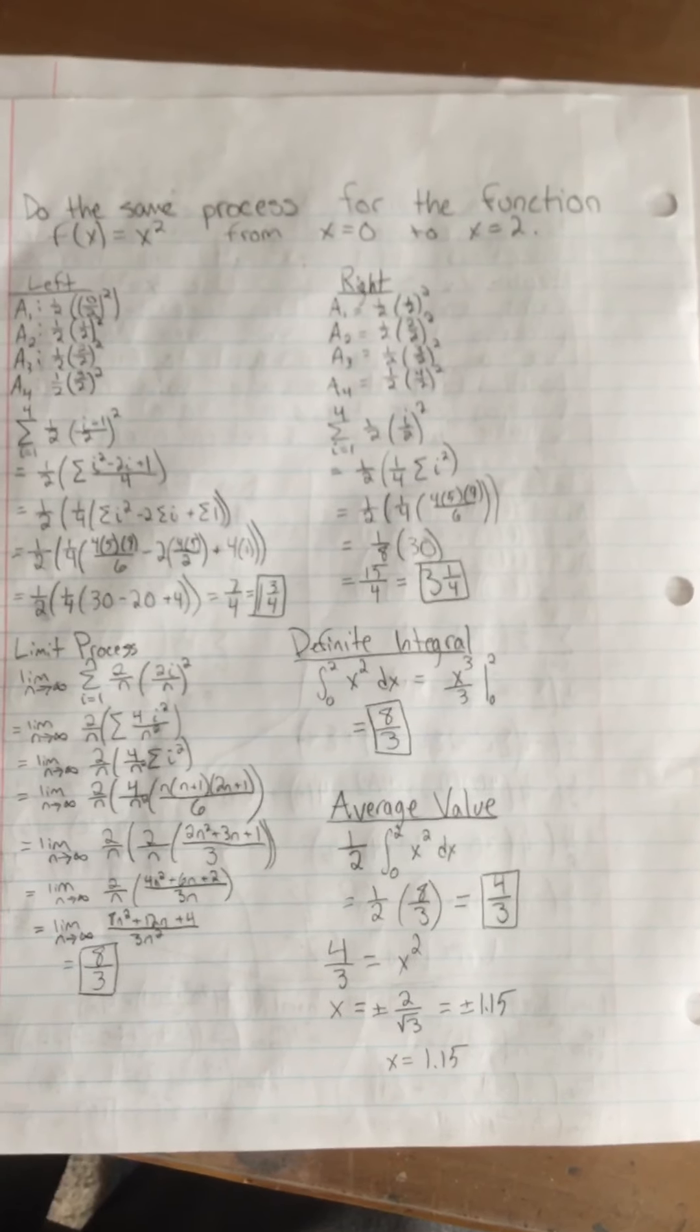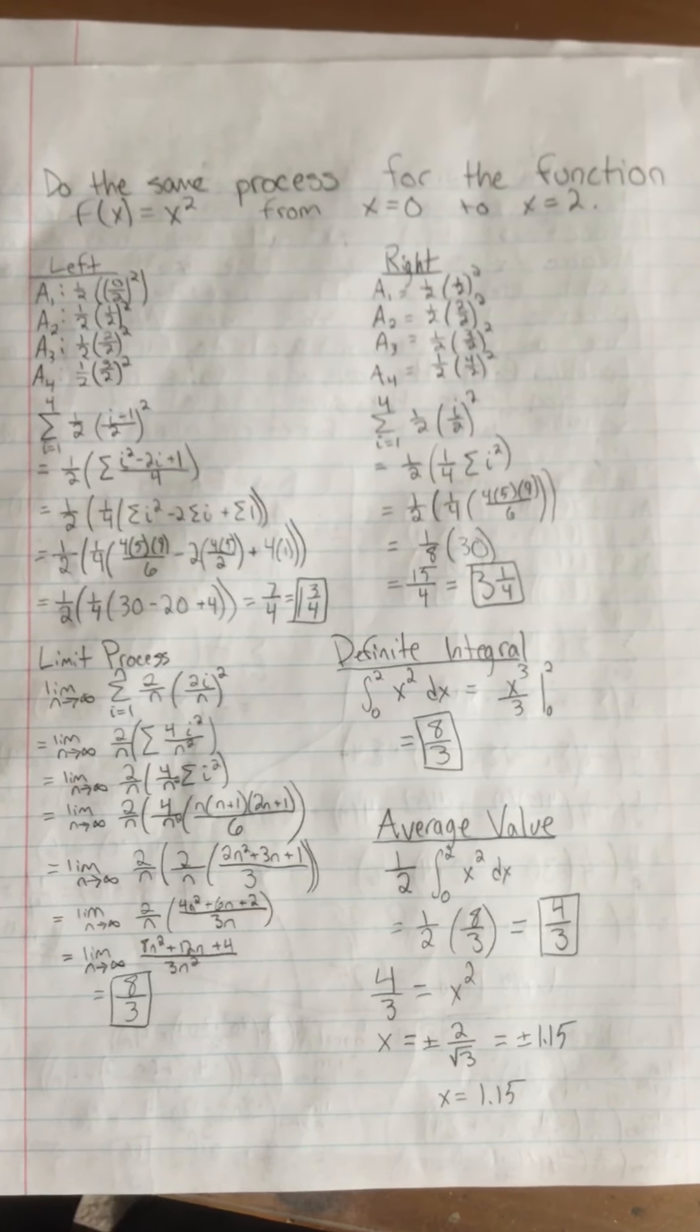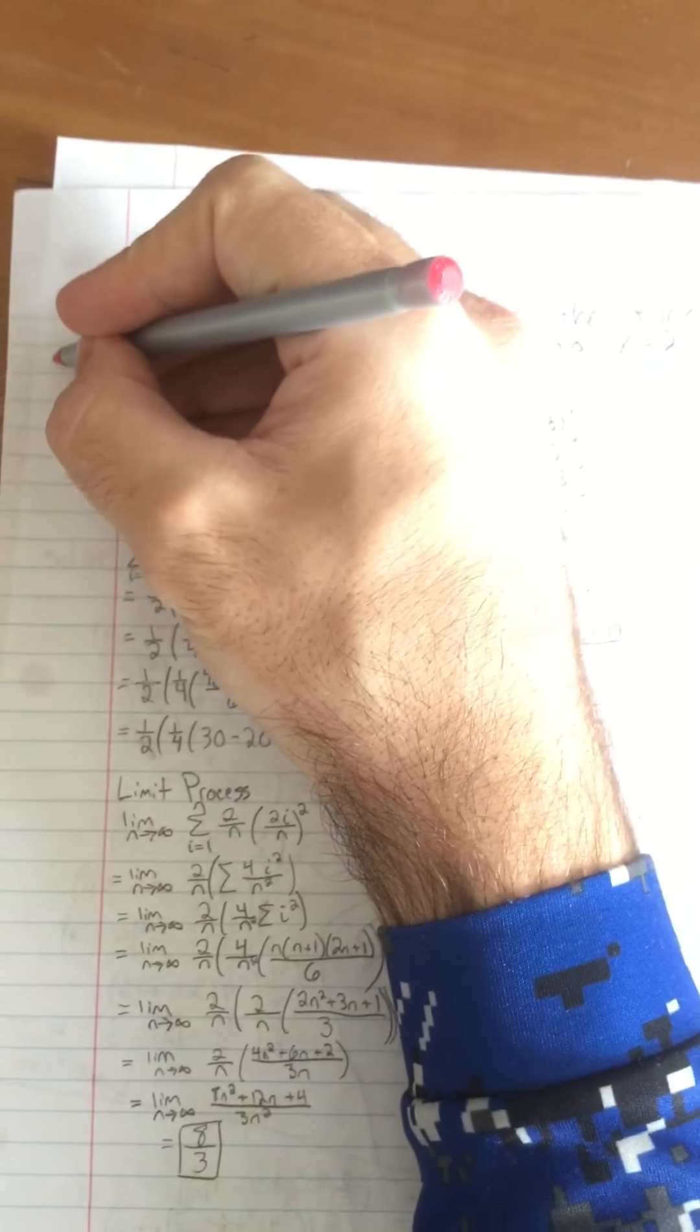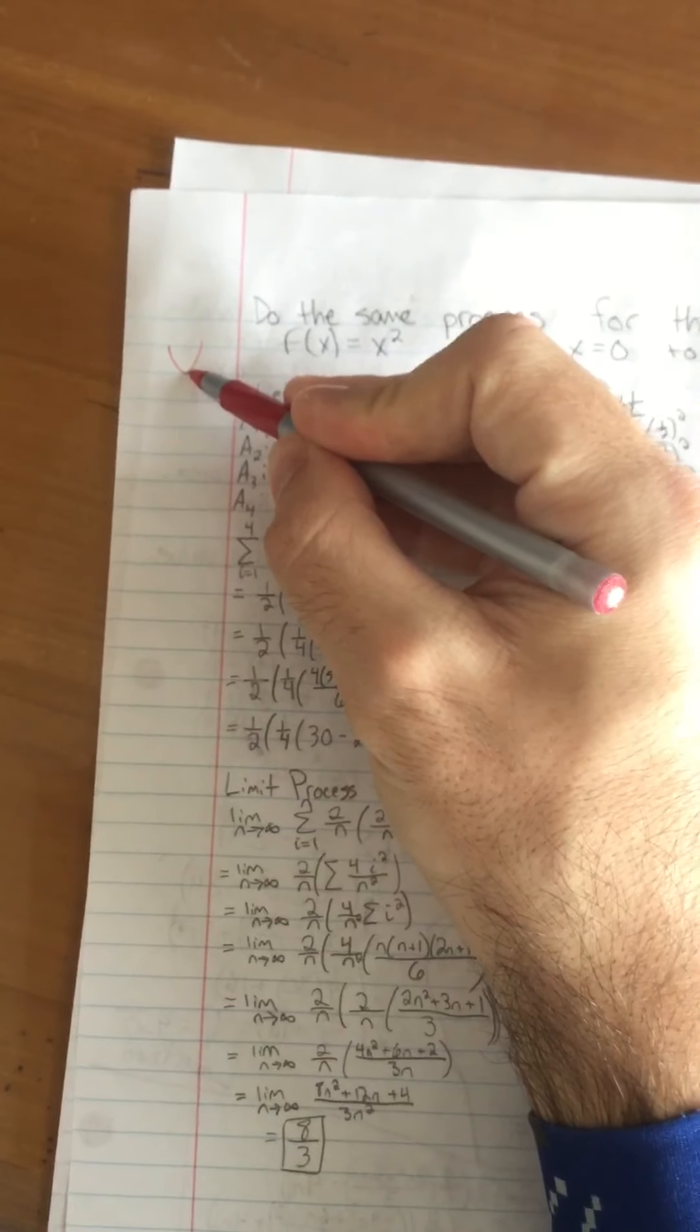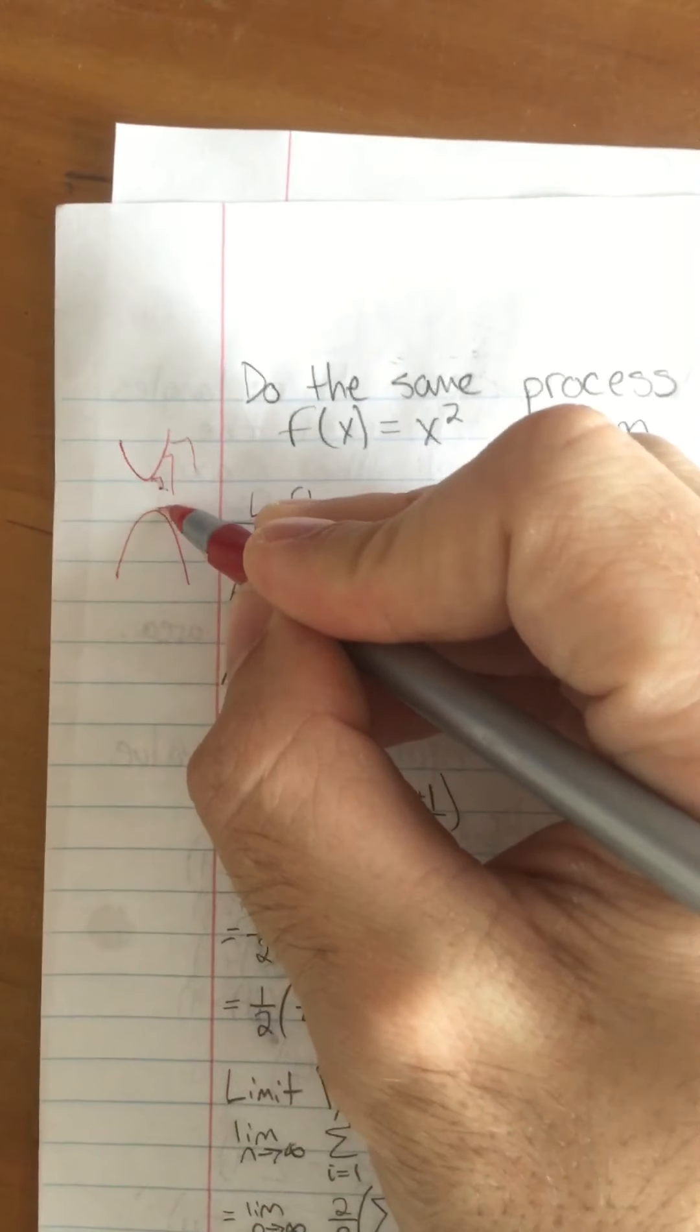And then going over the second example, should be pretty similar, only easier because it doesn't have that plus 4 in there. It's basically the same process, so I'm not going to go fully through it. Just some things that I want to point out. This one here, because this x squared is going to be a curve going up, the left endpoints of our rectangles are now going to be under the curve, alright, rather than the last one where we had a negative one, the left endpoints were above it.